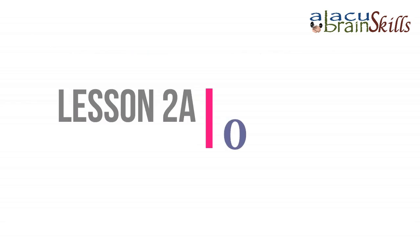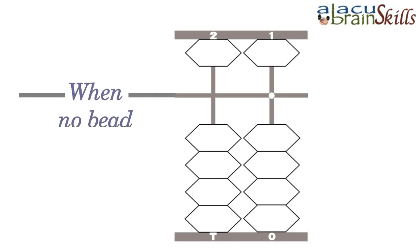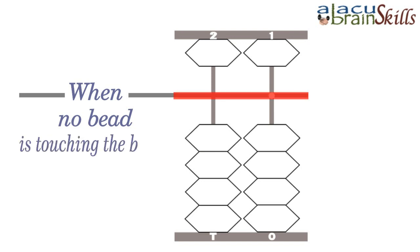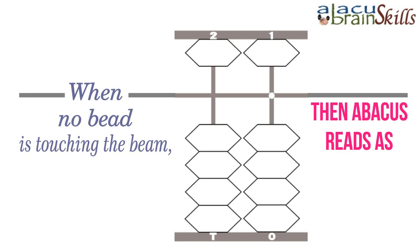Lesson 2A. When no bead is touching the beam, then the Abacus reads as 0.